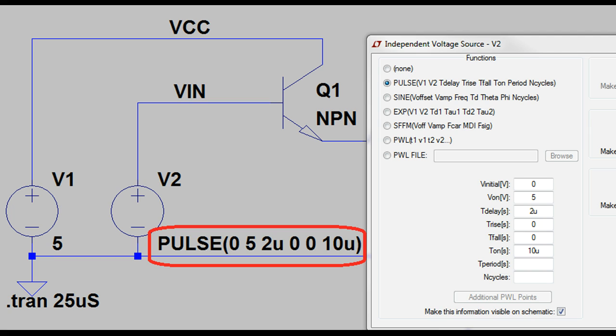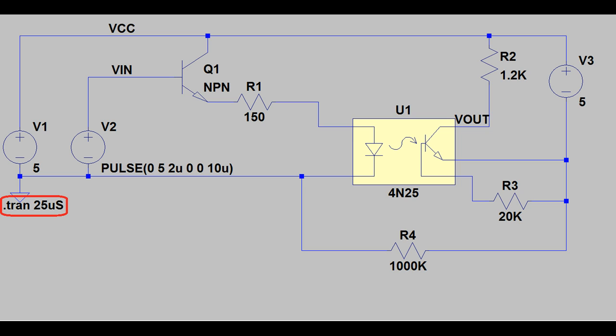Power supply V2 is simulating the input pulse and it's going from 0 to 5 volts. It starts at 2 microseconds and it's a 10 microsecond long pulse. The dot-tran 25 microseconds says to run the simulation for a total of 25 microseconds.